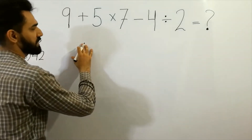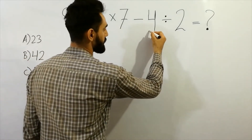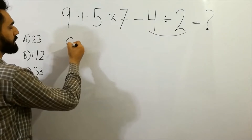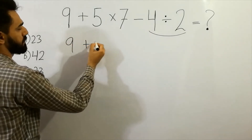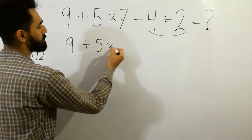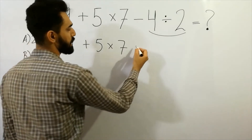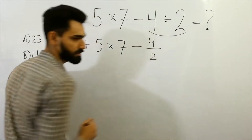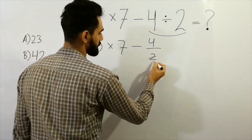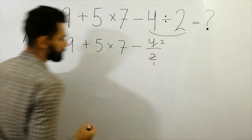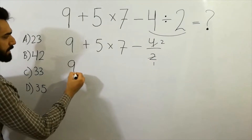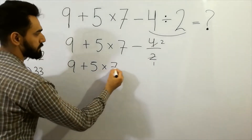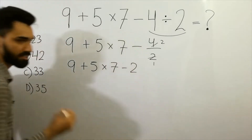For this question, you always do division first. So here: nine plus five multiply by seven, as it is, minus four divided by two. That's the first step. Two twos of four — we will get here nine plus five multiply by seven minus two.